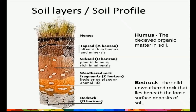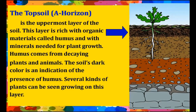The soil is made up of different layers, each with its own characteristics. The topsoil, or A-horizon, is the uppermost layer of the soil. This layer is rich with organic materials called humus and with minerals needed for plant growth. Humus comes from decaying plants and animals. The soil's dark color is an indication of the presence of humus, and several kinds of plants can be seen growing on this layer.